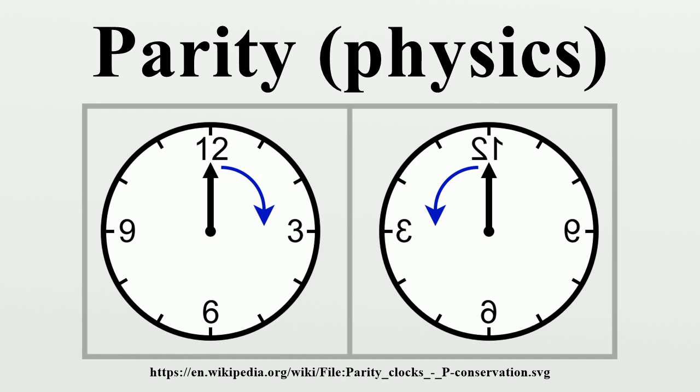parity serves as a powerful controlling principle underlying quantum transitions. A matrix representation of P has determinant equal to minus one, and hence is distinct from a rotation, which has a determinant equal to one.